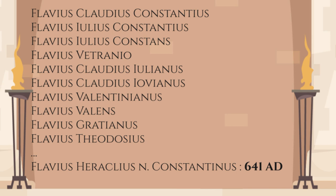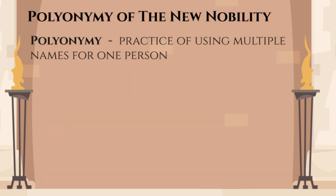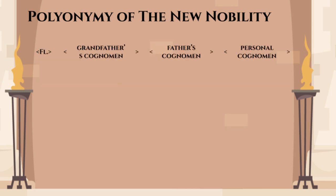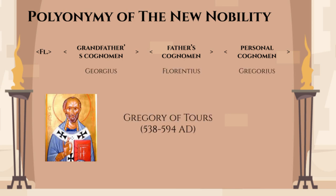The new imperial nobility even developed its own version of polyonomy that was different from that of the old senatorial class. In the previous video we saw that the remnants of the senatorial elite maintained their naming system based on the old tria nomina — some even kept a praenomen up to the 6th century. The new imperial nobility didn't have ancient pedigrees and centuries of familial connections to draw upon. Instead, they simply added the cognomina of their forebearers to their name. Bishop Gregory of Tours, for example, is Georgius Florentius Gregorius — this full name commemorates his father Florentius and his grandfather Georgius.